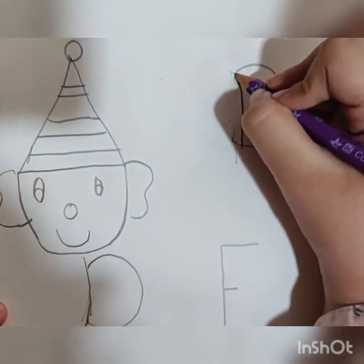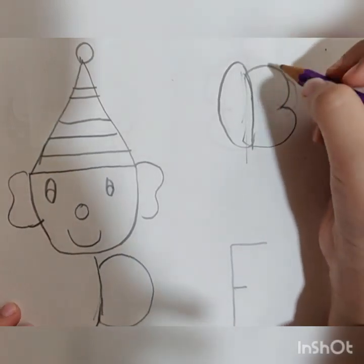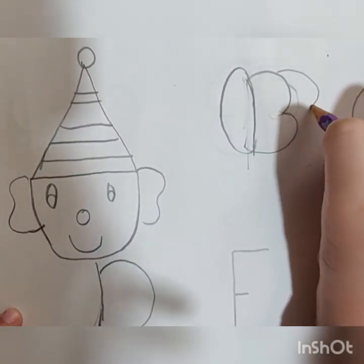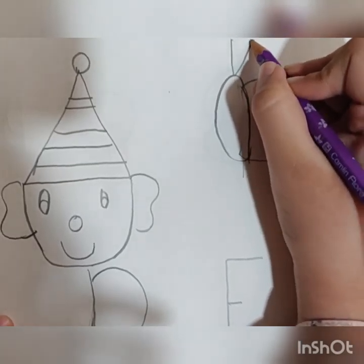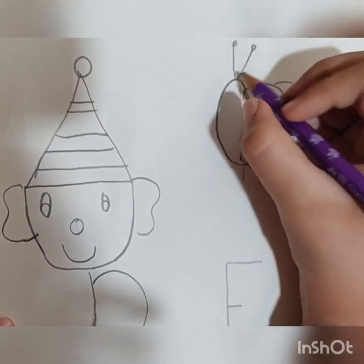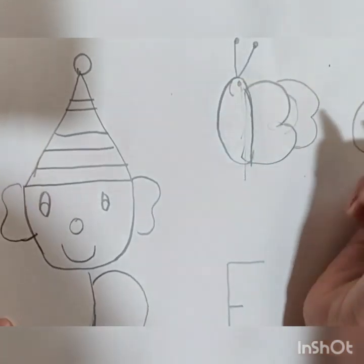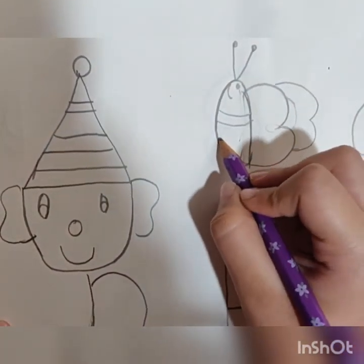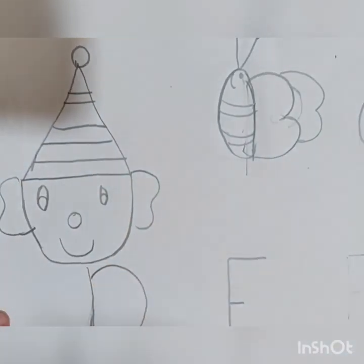From the letter B, we are going to draw a honeybee. And of course, honeybee has yellow and black stripes.